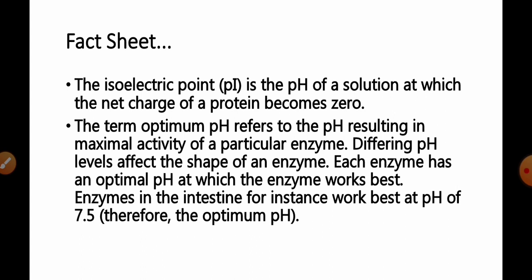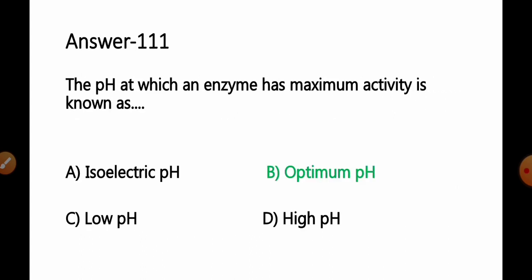Therefore, we can say for those enzymes optimum pH is 7.5. So it is the optimum pH at which the enzyme works or activity of the enzyme is maximum. So we can say option B. Optimum pH will be the correct answer for this question.